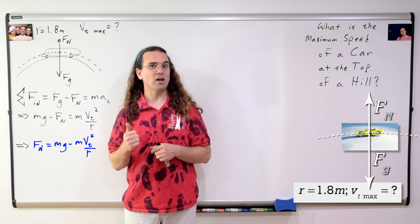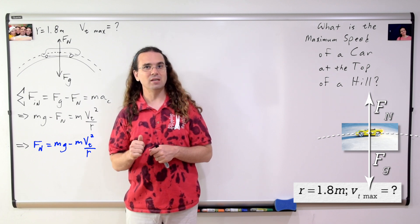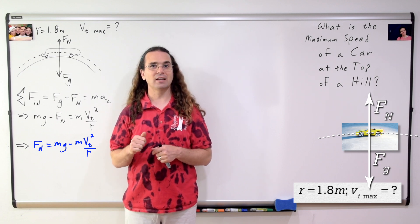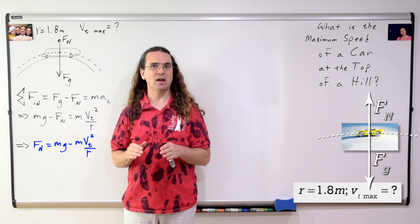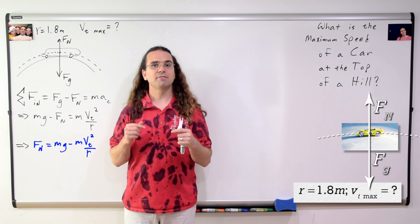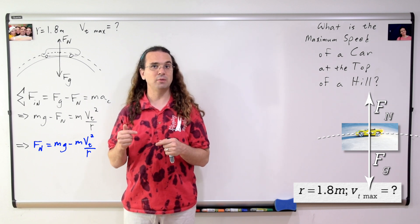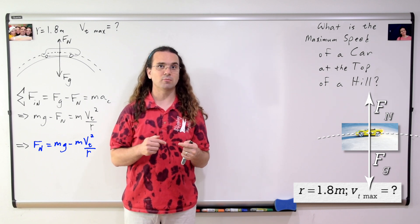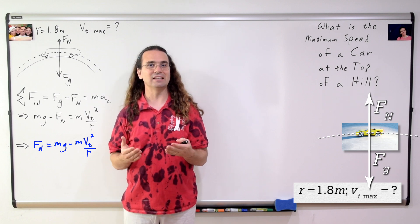In other words, the ground cannot pull down on the car. That means the maximum speed the car can have and still maintain contact with the ground is when the force normal is reduced to zero. If the car is moving faster than the speed which results in zero force normal, then the tires will leave the ground.